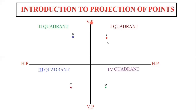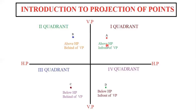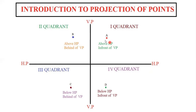So there are four points: point A, point B, point C, point D. Point A is above HP, in front of VP. Point B is above HP, behind VP. Point C is below HP, behind VP. Point D is below HP, in front of VP. I am just representing each point with respect to the horizontal and vertical plane.